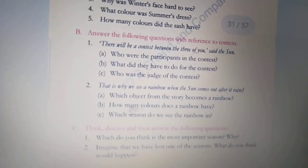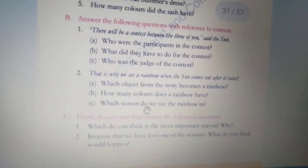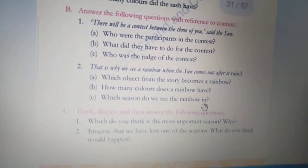Next is, how many colors does a rainbow have? Rainbow me kitnay colors hootate hai? There are seven colors in a rainbow. Next is, which season do we see the rainbow in? Hum kawansi season mein rainbow dekhte hai? In the monsoon season.